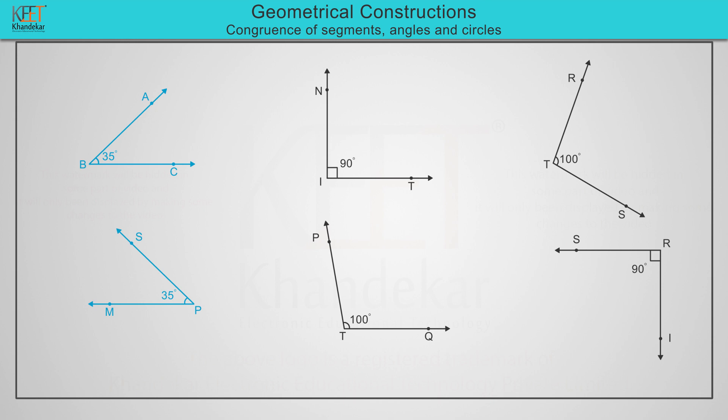Measure angle NIT equals measure angle SRI, and measure angle PTQ equals measure angle RTS. So we write angle ABC is congruent to angle MPS, angle NIT is congruent to angle SRI, and angle PTQ is congruent to angle RTS.